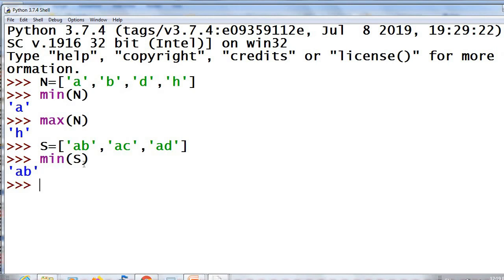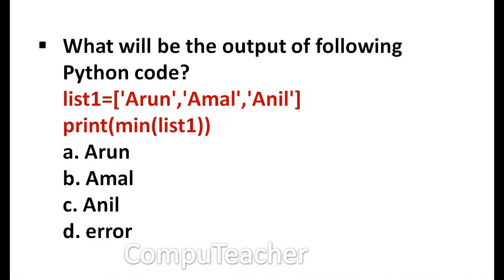If the first two characters are the same, it will check for the third character. So in the question with names arun, amel, anil — the first character is 'a' for all. Then it checks the second character: r, m, and n. Alphabetically m is the minimum, so it will return 'amel' as the answer. Remember, it will not return any error.